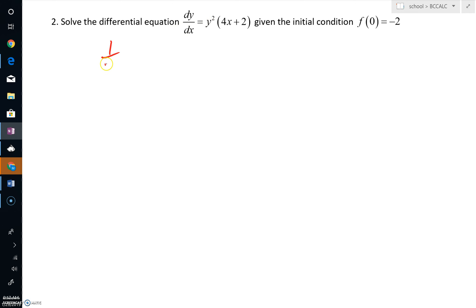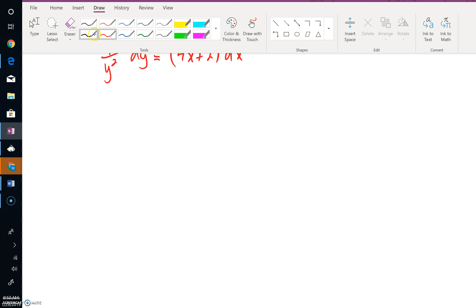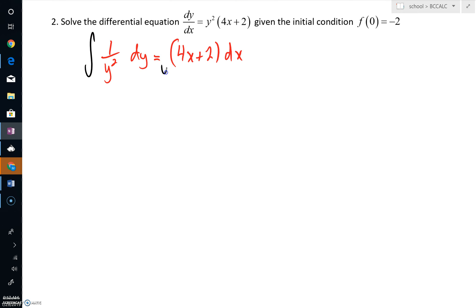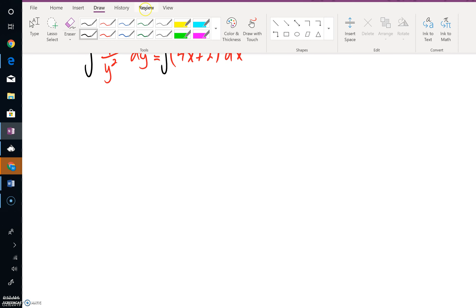So I'm going to divide both sides by y squared, or multiply by 1 over y squared. Simultaneously, I'm going to multiply by dx. This is known as separating the variables, and it's a necessary first step in solving any differential equation.